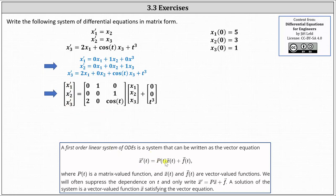On the right side, we now need P of t times x of t, where P of t is the matrix that will contain the functions of t, or constants, being multiplied by x1, x2, and x3. Looking at the first equation, because we have x1 prime equals 0x1 plus 1x2 plus 0x3, the first row in P of t is 0, 1, and 0.